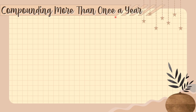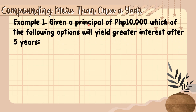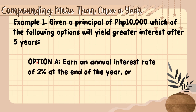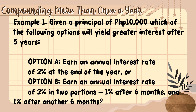Before discussing compounding more than once a year, let us first have this example as a review. Given a principal of 10,000 pesos, which of the following options will yield greater interest after five years? Option A: earn an annual interest rate of 2% at the end of the year. Option B: earn an annual interest rate of 2% in two portions — 1% after six months and 1% after another six months. This is both a review and a comparison for compounding annually versus compounding more than once a year.